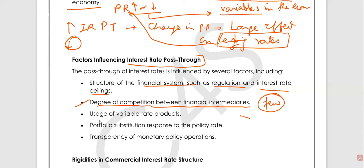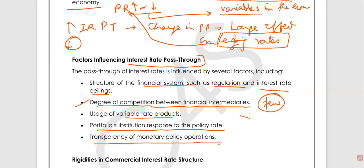Other factors include: usage of variable rate products, portfolio substitution response to the policy rate, and the transparency of monetary policy options.